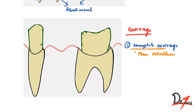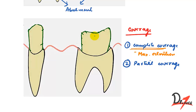The second type is partial coverage or partial veneer retainer. These retainers do not involve all the surfaces of the abutment, so they require less tooth preparation and they have superior aesthetics. The facial surface of anterior teeth was usually left unprepared, so the natural tooth was visible, making it more aesthetic.